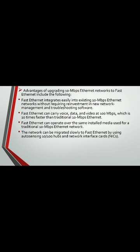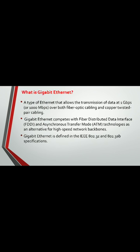Advantages of upgrading 10 Mbps Ethernet networks to Fast Ethernet include: Fast Ethernet integrates easily into existing 10 Mbps Ethernet networks without requiring reinvestment in new network management and troubleshooting software. Fast Ethernet can carry voice, data, and video at 100 Mbps, which is 10 times faster than traditional 10 Mbps Ethernet. It can operate over the same installed media, and the network can be migrated slowly to Fast Ethernet by using auto-sensing 10/100 hubs and network interface cards.